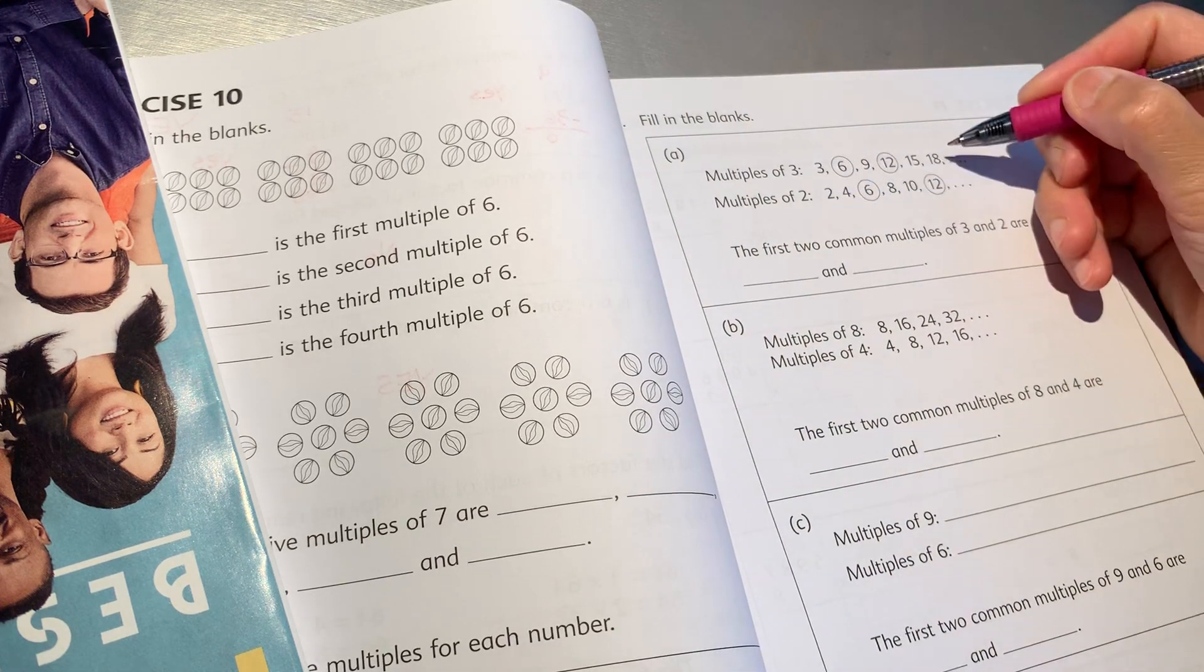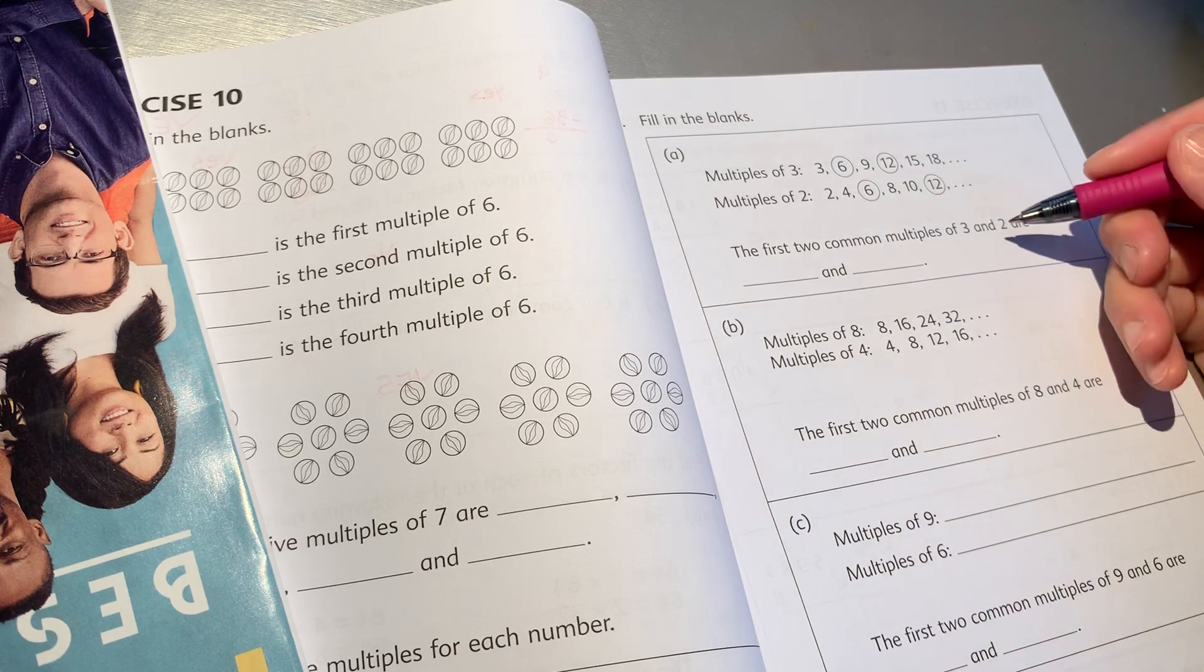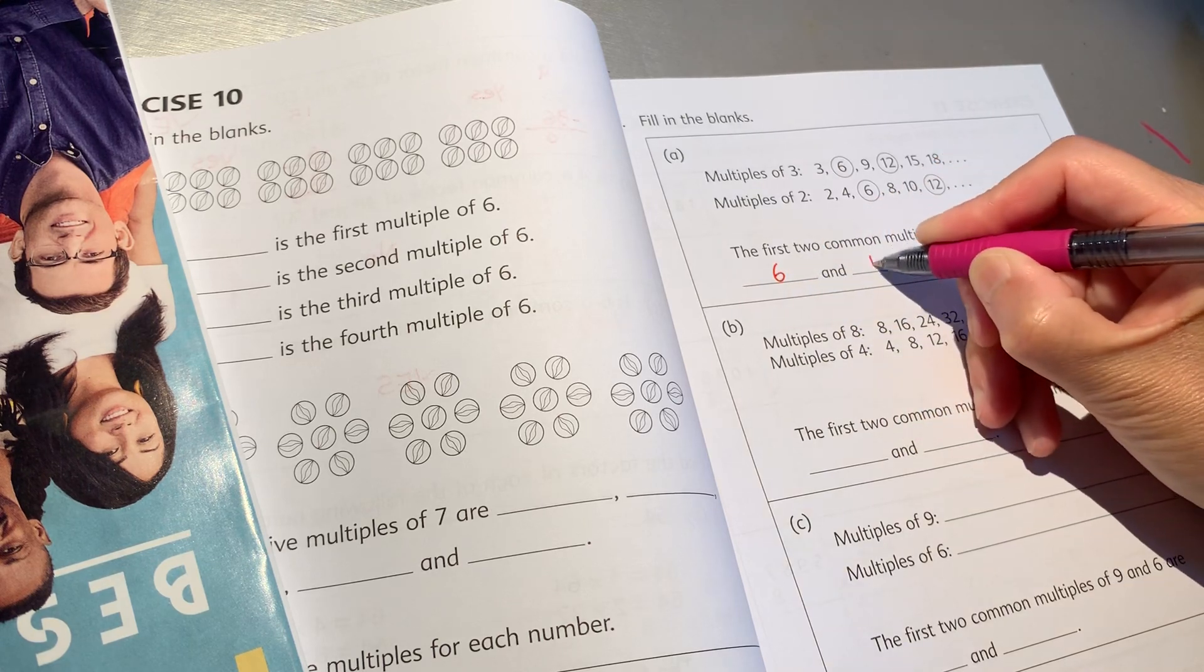Multiples of 3, multiples of 2, the first common multiples of 6 and 12.